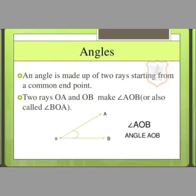Next is angles. An angle is made up of two rays starting from a common endpoint. For example, angle AOB is given which is made up of two rays, ray OA and ray OB, which make angle AOB or we can say BOA.